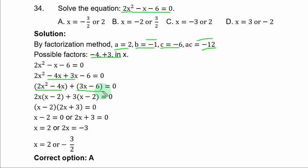From the first group, 2x is common. If you factor it out, you are left with x minus 2 plus from the second group, 3 is common. If you factor it out, you are left with x minus 2 in bracket equal to 0.